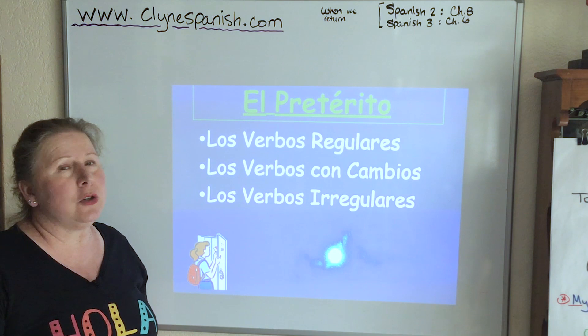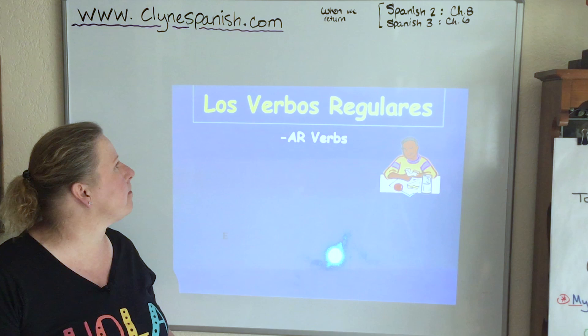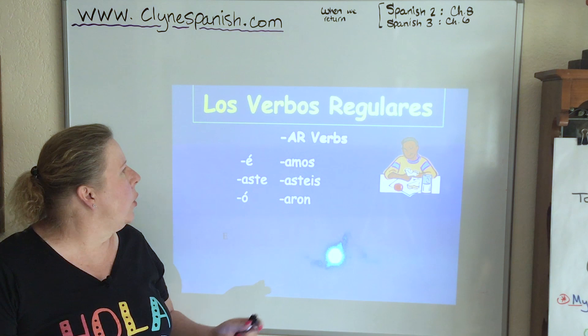All right, let's switch over to a lesson on the preterite. El pretérito, as it's known in Spanish. So you have regular verbs, you have verbs that have changes, and then you have verbs that are just flat-out irregular. Remember, I told you, the preterite is not for the faint at heart — it is a difficult tense. Our AR verbs, regular ones, are: é, aste, ó, amos, asteis — your vosotros, which you don't have to know — and aron for the ellos/ustedes form.